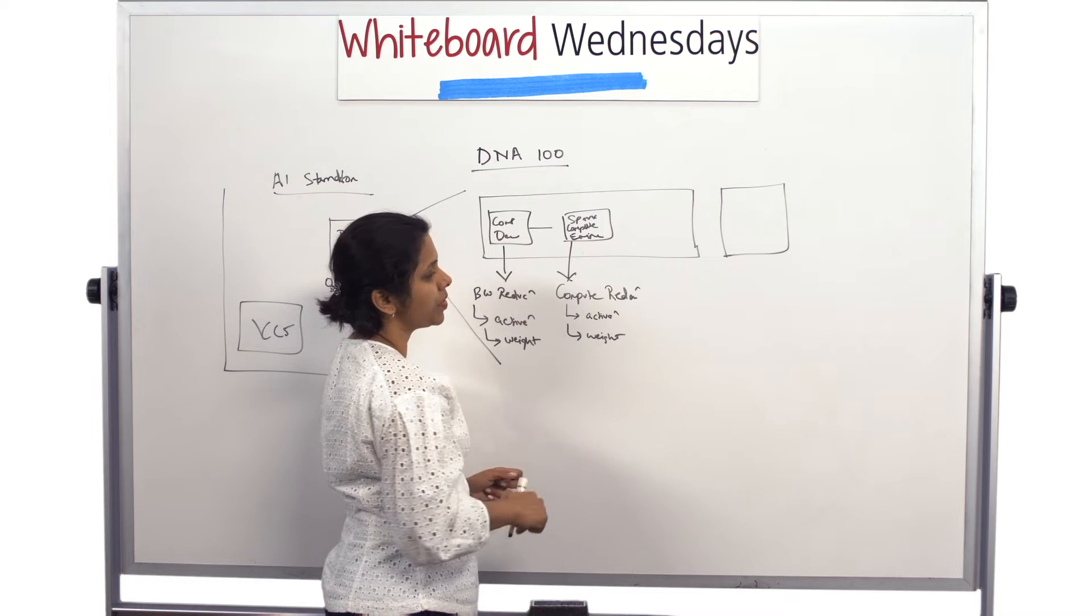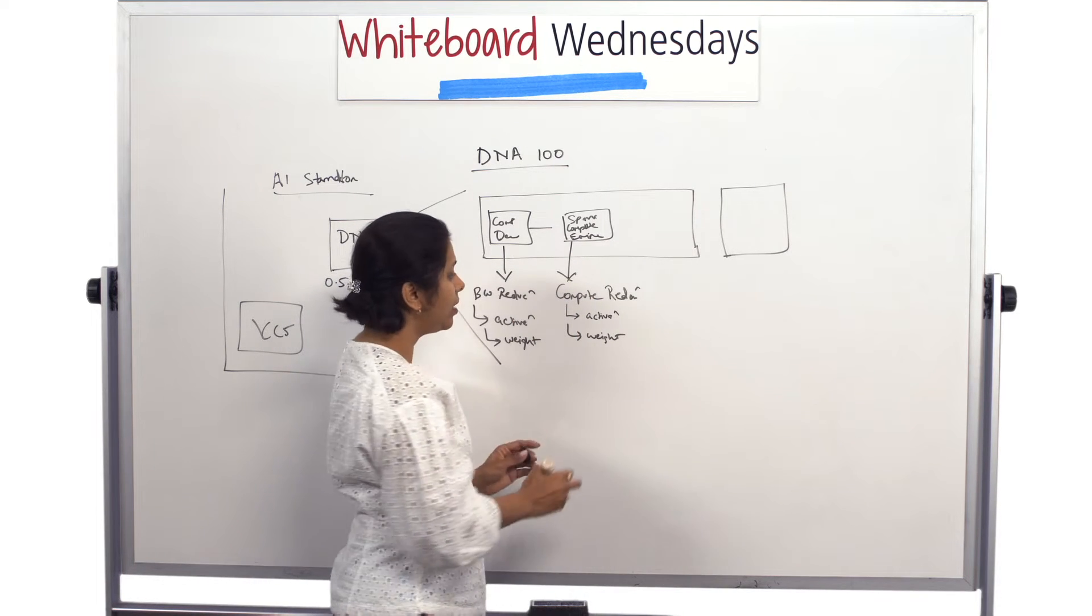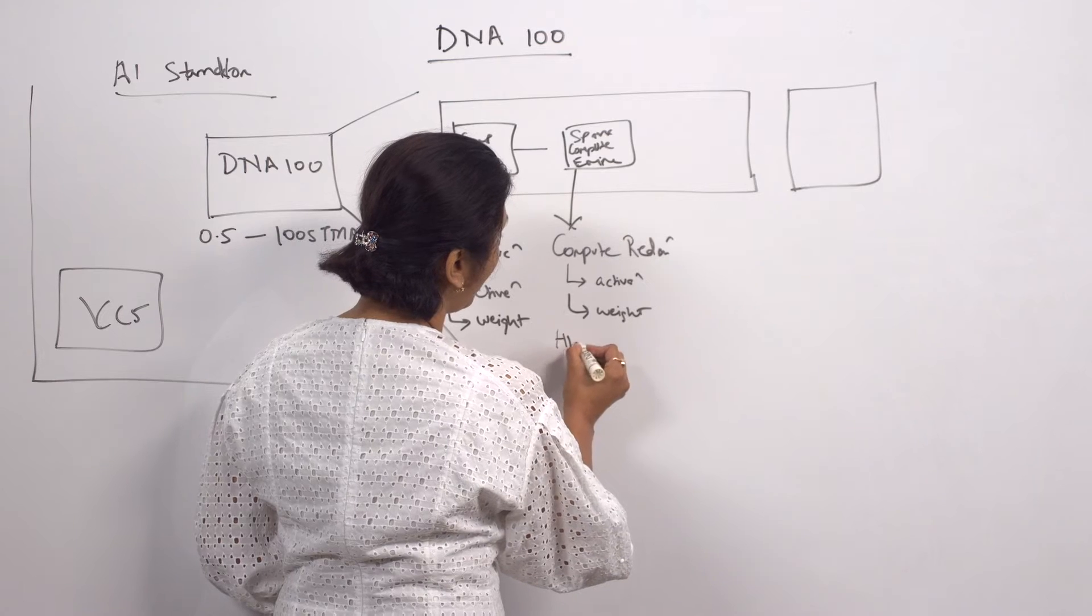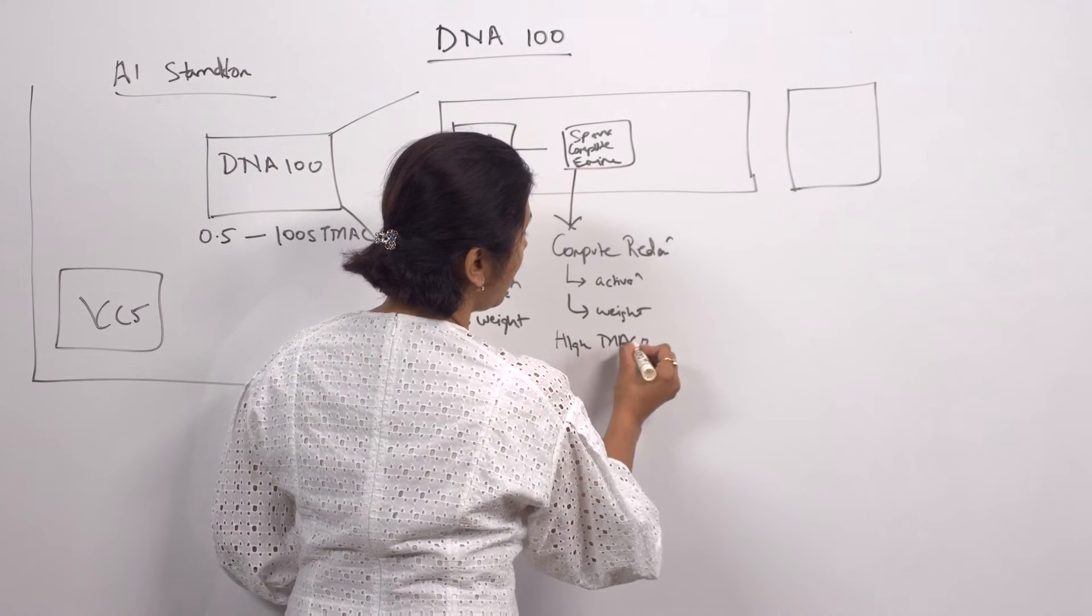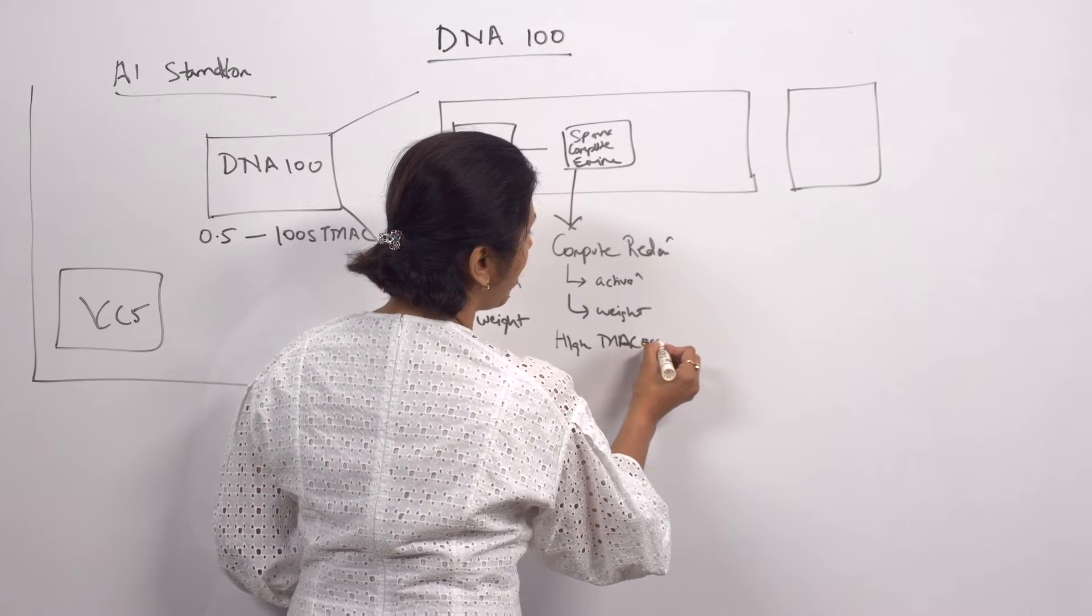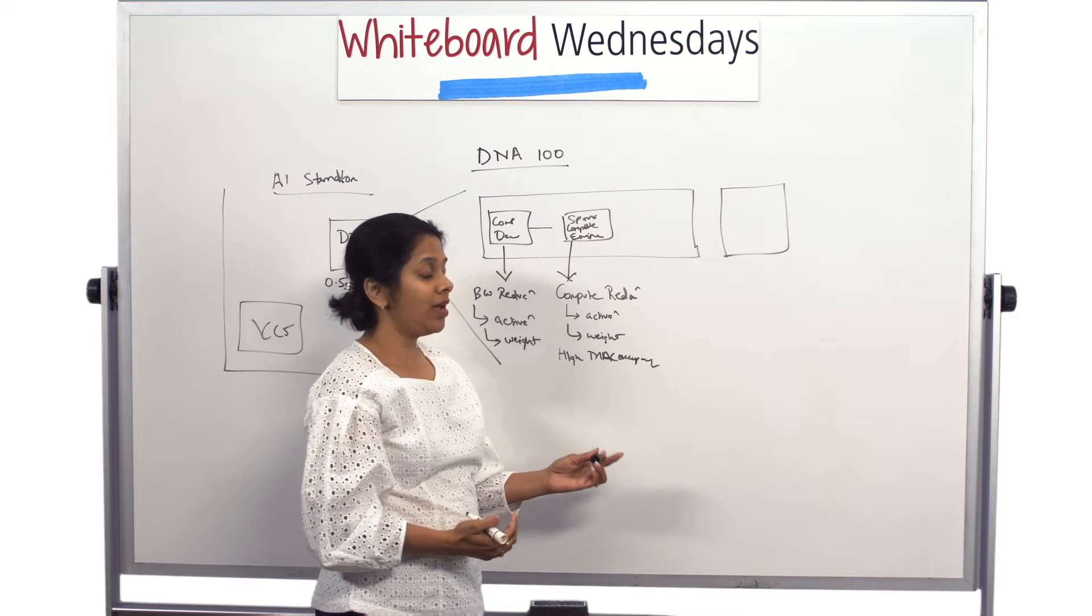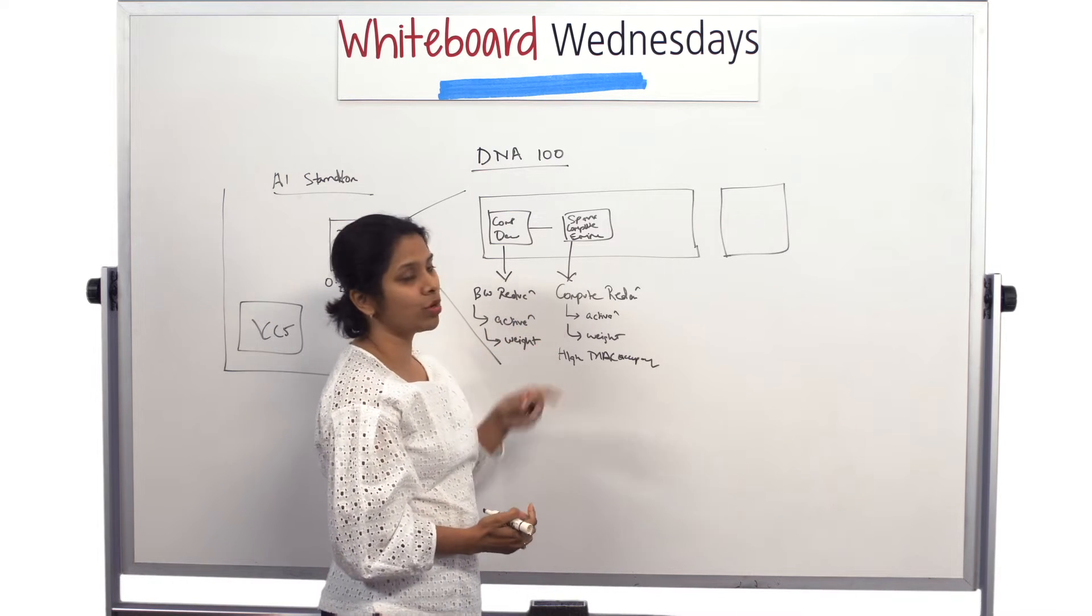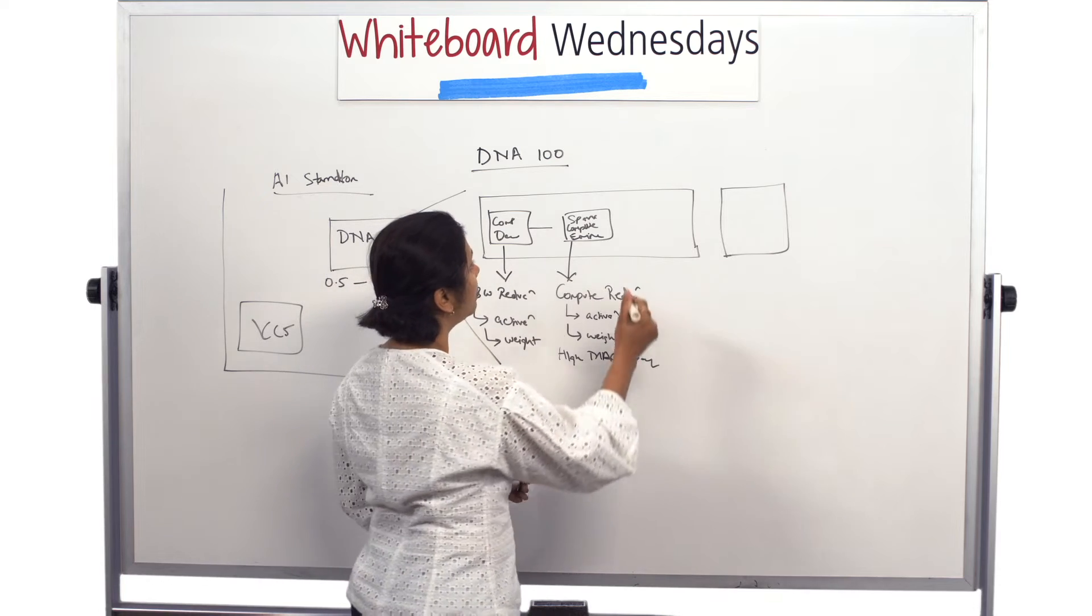Another thing about this sparse compute engine is it's been such efficiently and flexibly designed that it gives us very high MAC utilization or MAC occupancy rate. By giving the high MAC occupancy rate we are able to get a very high MAC utilization, and hence because of those two contributing factors we are able to get much higher throughput than what we are seeing in the market.